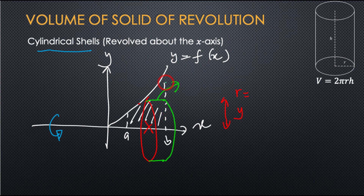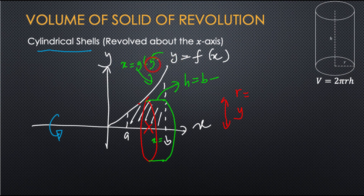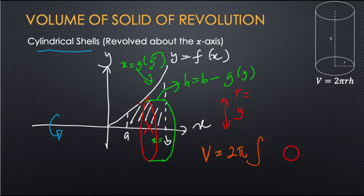In here, x is equal to b. So the height is b minus this function. This function should be x equal to something — x equal to b. So this function must also be in terms of x. From here, you will get x equal to g(y). So the height is b minus g(y). The volume is 2π times r times y, times b minus g(y).